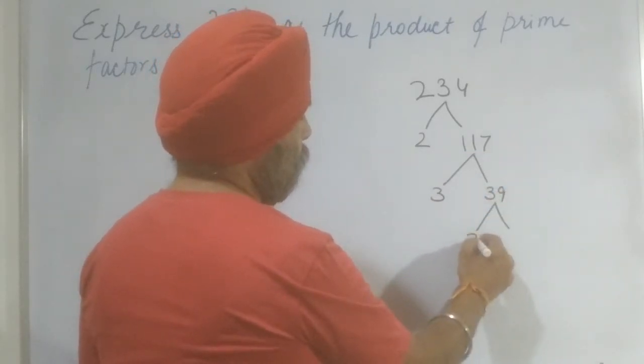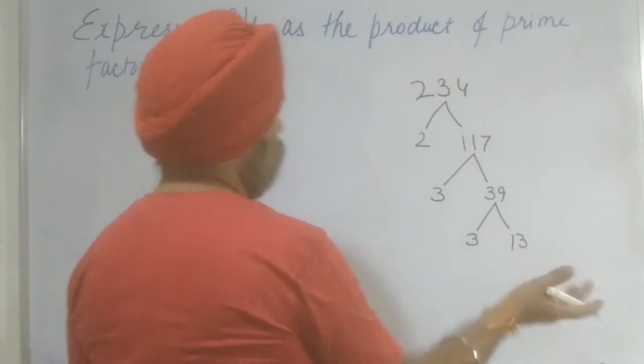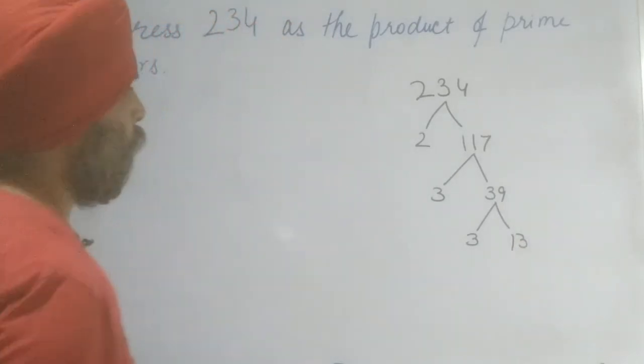Okay. Now again it is divisible by 3 and 13. So here our factor tree ends up.